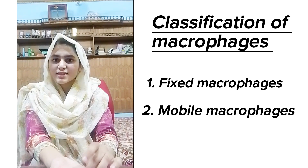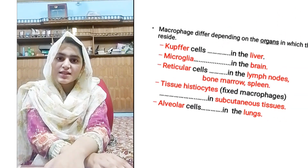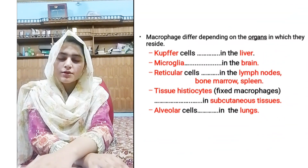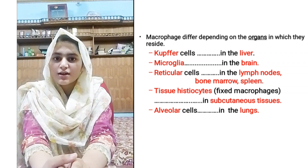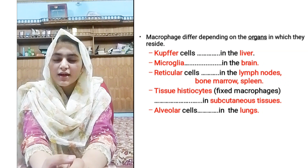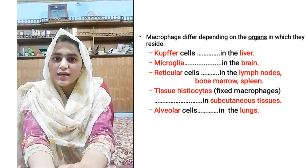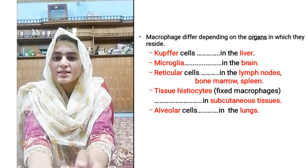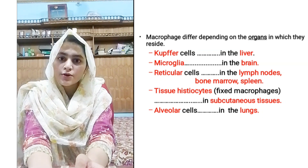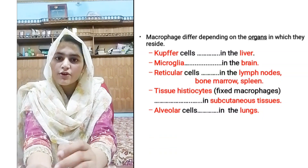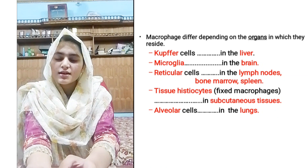Fixed macrophages are present in specific organs and are given different names according to the organ in which they are present. In the liver, these cells are called Kupffer cells. In the spleen, lymph nodes, and bone marrow, these cells are called reticular cells. In the lungs, they are called alveolar cells. In the central nervous system, they are called microglia cells. In the meninges of the CNS, they are called meningocytes. In the subcutaneous tissues of the skin, they are called histiocytes.